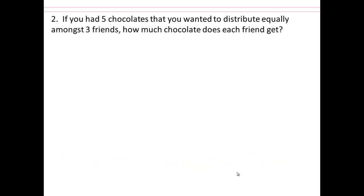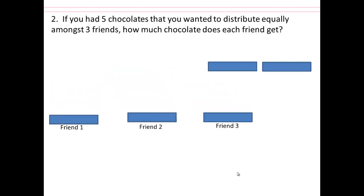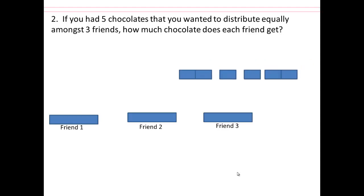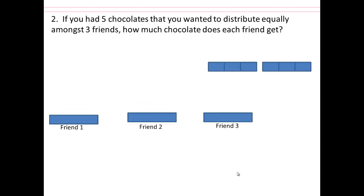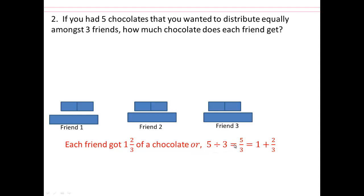Suppose you have 5 chocolates and 3 friends, and want to share equally. Give each friend 1 chocolate. The remaining 2 chocolates can be split — break each into thirds and give everybody 2 thirds. So each person gets 1 and 2 thirds of a chocolate. Therefore 5 divided by 3 equals 5 over 3, or 1 whole plus 2 thirds.